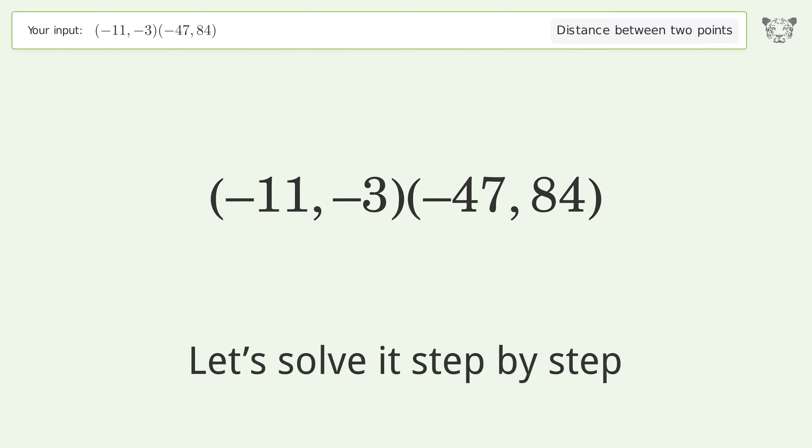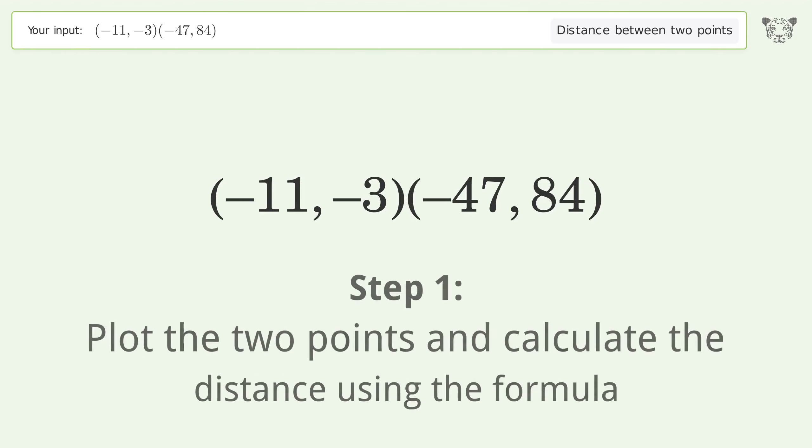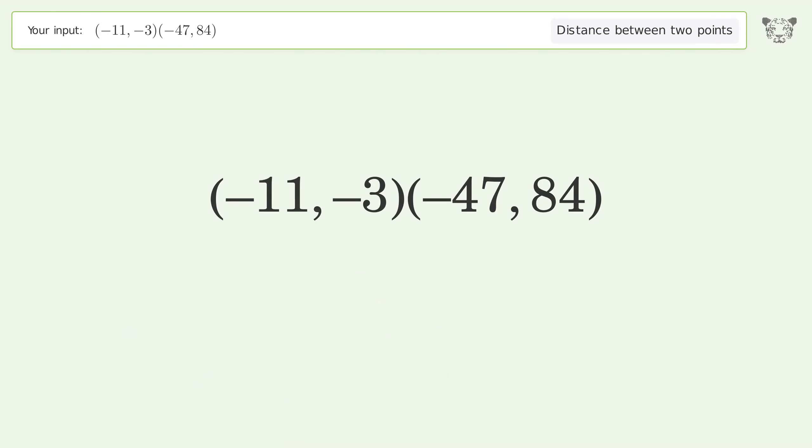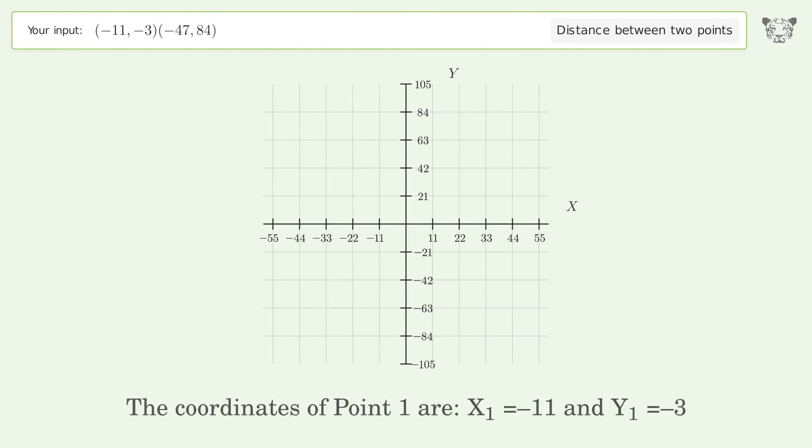Let's solve it step by step. Plot the two points and calculate the distance using the formula. The coordinates of point 1 are x₁ equals negative 11 and y₁ equals negative 3. The coordinates of point 2 are x₂ equals negative 47 and y₂ equals 84.